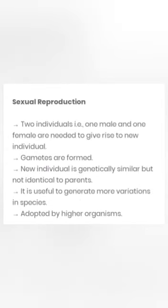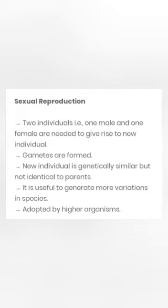Now let us learn about sexual reproduction. In this type of reproduction, two individuals — male and female — are needed to give rise to a new individual. Gametes are formed. The new individual is genetically similar but not identical to the parents, because it is formed by the fusion of male gamete and female gamete having different sets of characters. This type of reproduction is useful to generate more variations in species and is seen in higher organisms.